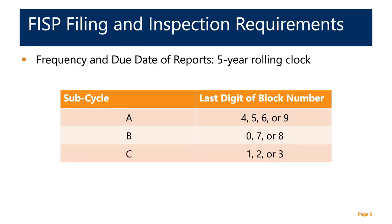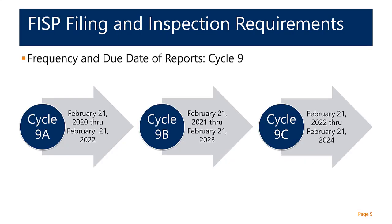Prior to cycle seven, the earlier iterations of this ordinance required that all qualifying buildings perform inspections and file associated reports every five years. Starting in cycle seven, these filings were divided into sub-cycles — two-year windows. The sub-cycle of your building is determined by the last digit of the block number, as shown here under sub-cycles A, B, and C. These sub-cycles occur over a five-year rolling clock window. We are currently within cycle nine, which opened February 21st of this year and ends February 21st of 2022.